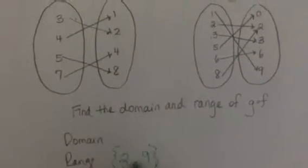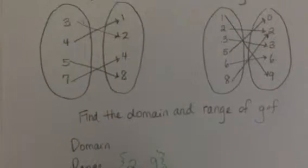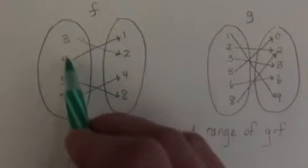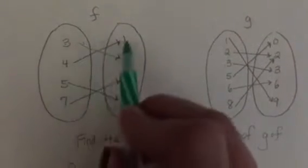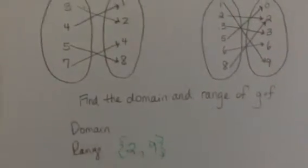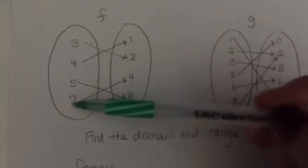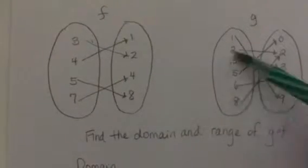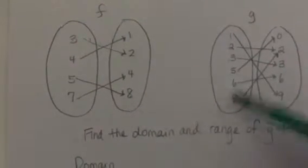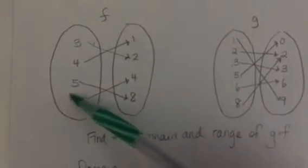So to me, the range is the easiest to find. Like, four goes — when you put in four, out comes one. When you put in one, out comes nine. That's how I got that. Your domain will usually be all of these numbers right here. Now let me just say, it's not seven, because when I took seven and out comes four, there was not a four over here, so I couldn't even use it. So I can't use the seven.